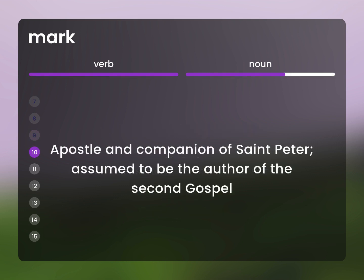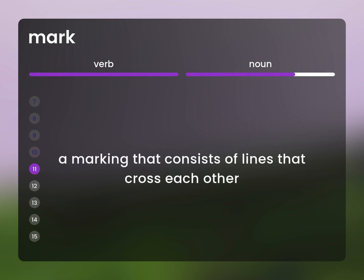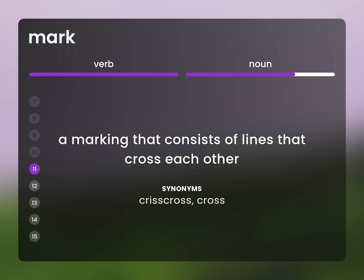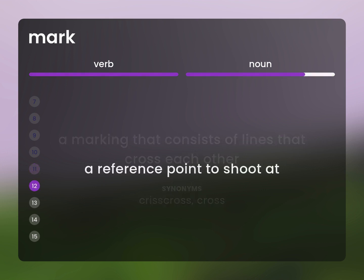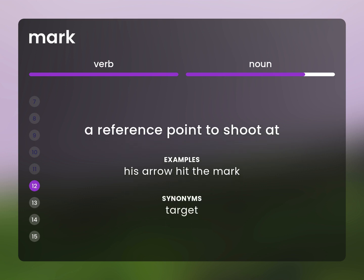Apostle and companion of St. Peter, assumed to be the author of the second gospel. St. Mark. A marking that consists of lines that cross each other. Crisscross. Cross. A reference point to shoot at. His arrow hit the mark. Target.